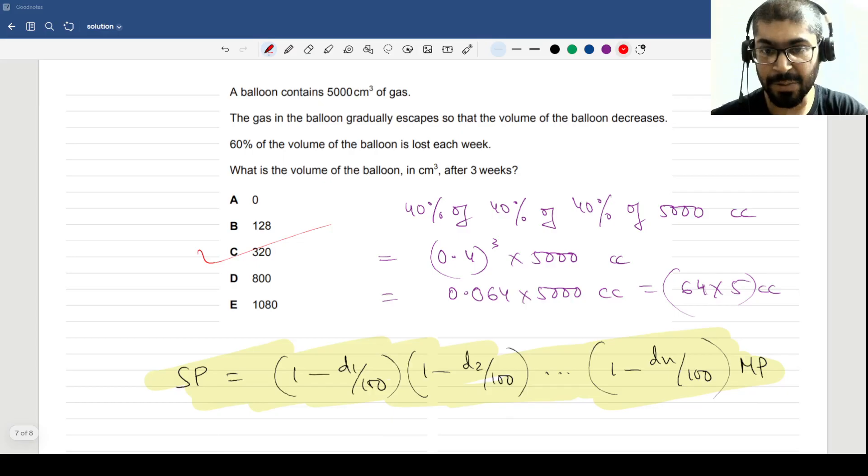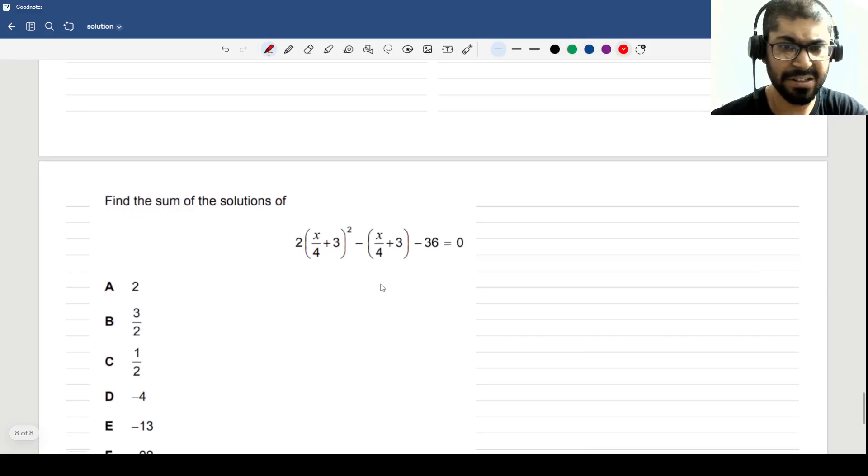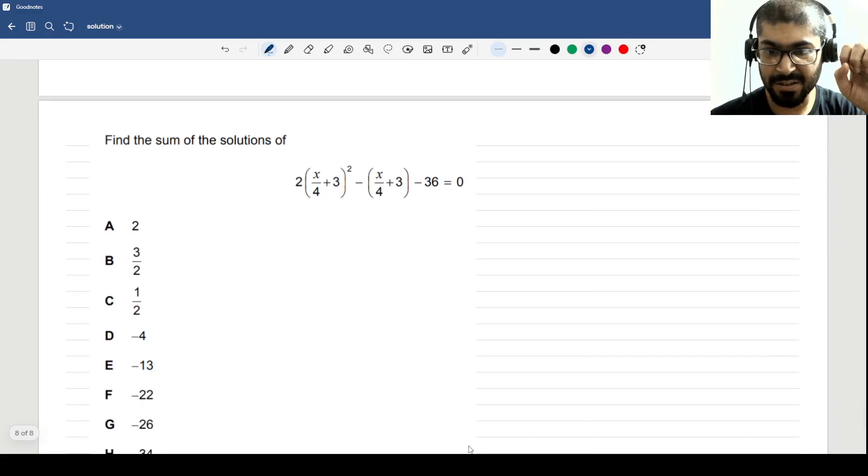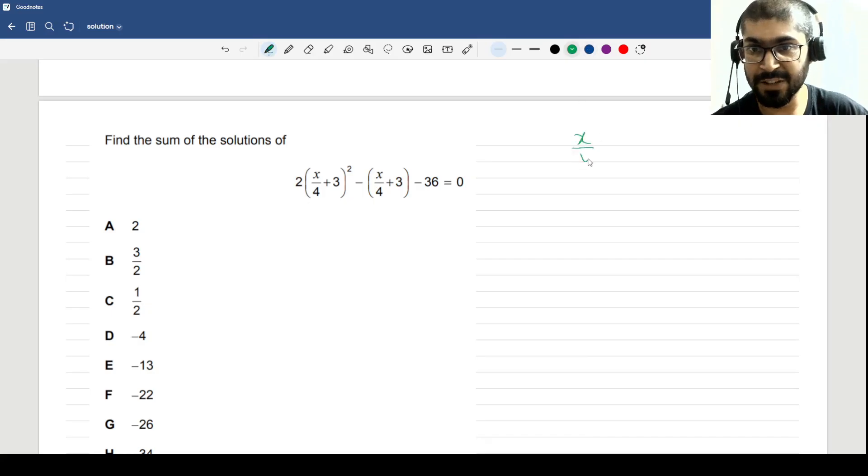The next sum was number 6 in that exam, and this one was sum number 7. This one is from the section quadratic equations, specifically bundled in equations reducible to quadratic form. What you do here is you don't need to expand this - you can take 2(x/4 + 3)² - (x/4 + 3) - 36 = 0 and let (x/4 + 3) = a. Then this equation reduces to 2a² - a - 36.